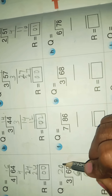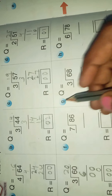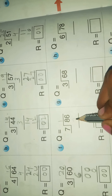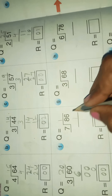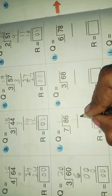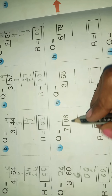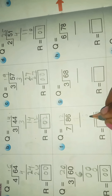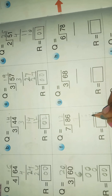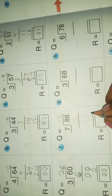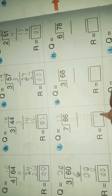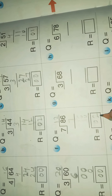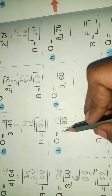Next example: 7 ones are 7, 8 minus 7 is 1. Take 6 down. 7 goes into 16, take 6 minus 4 is 2. 1 minus 1 is 0. The remainder is 2 and the quotient is 12.